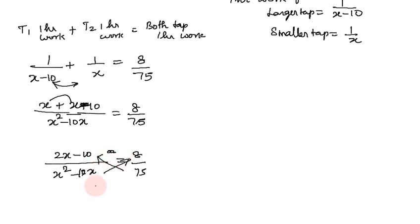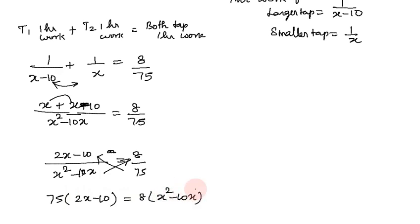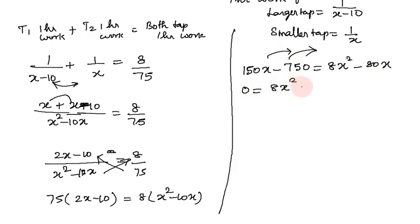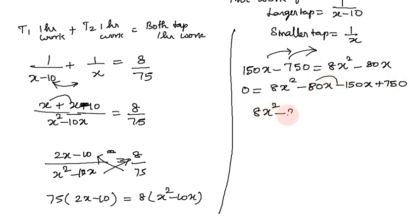Now cross multiply: 75 times 2x minus 10 equals 8 times x squared minus 10x. So 150x minus 750 equals 8x squared minus 80x. Rearranging: 8x squared minus 80x minus 150x plus 750 equals 0, giving 8x squared minus 230x plus 750 equals 0.